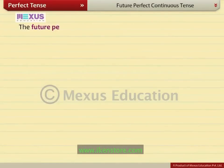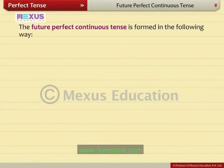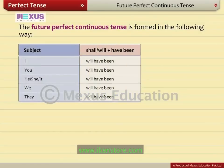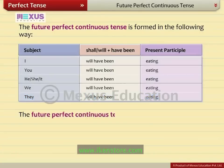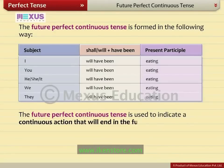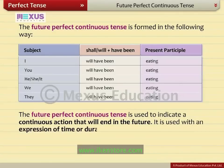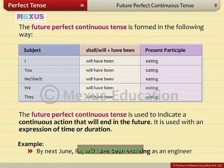The future perfect continuous tense is formed in the following way: shall or will plus have been plus present participle. For example, they will have been eating. It is used to indicate a continuous action that will end in the future, and is used with an expression of time or duration. For example, by next June, Raj will have been working as an engineer for 10 years.